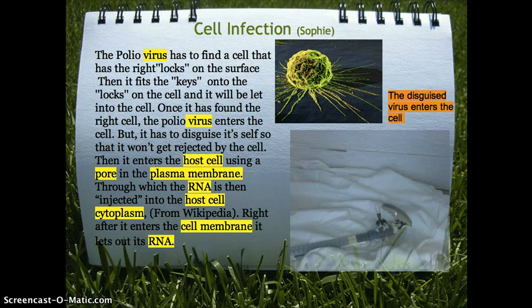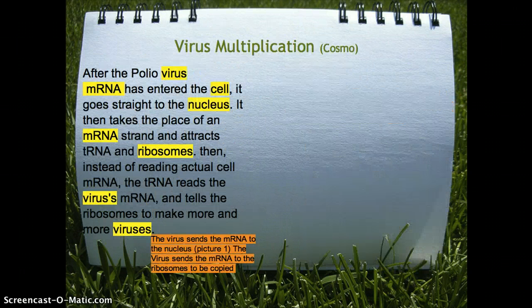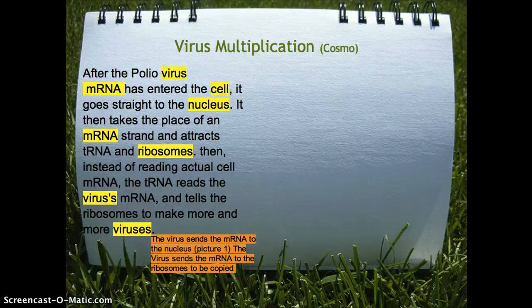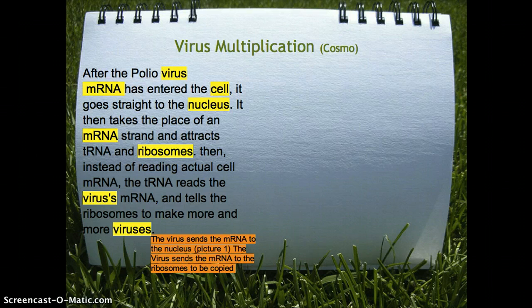That is the cell, and that is our Lego model. After the polio virus's mRNA has entered the cell, it goes straight to the nucleus. Then it takes the place of an mRNA made by the DNA in the nucleus, and attracts some tRNA and ribosomes. Then, instead of reading the actual cell mRNA, the tRNA accidentally reads the virus and tells the ribosomes to make more and more viruses instead of cell functions.